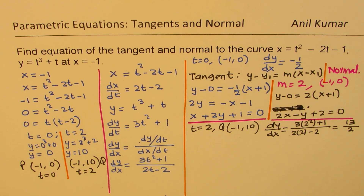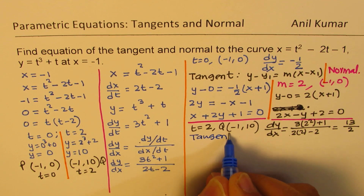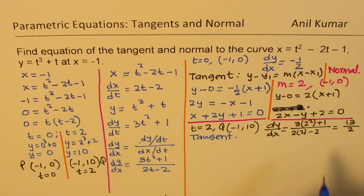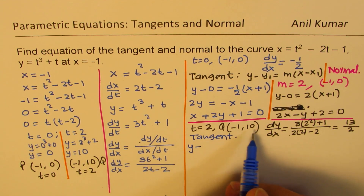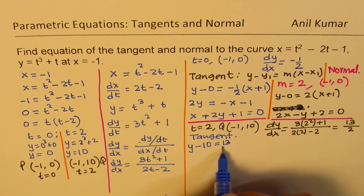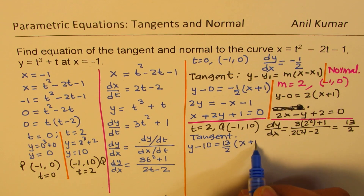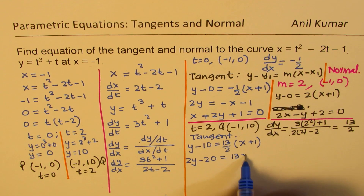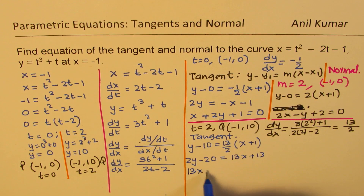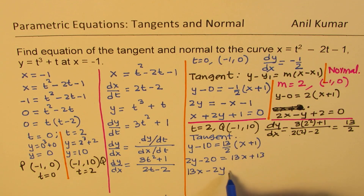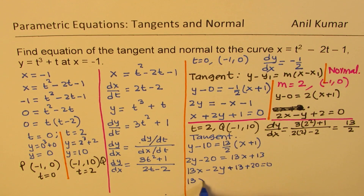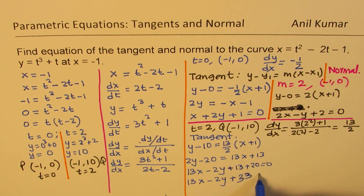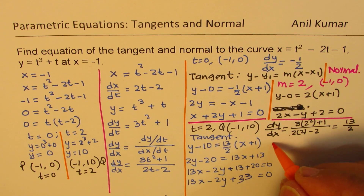Let's find the equation of the tangent at point Q. Using y minus 10 equals (13 over 2)(x minus minus 1), cross multiplying gives 2y minus 20 equals 13x plus 13. Rearranging: 13x minus 2y plus 33 equals 0. That is the equation of the tangent.